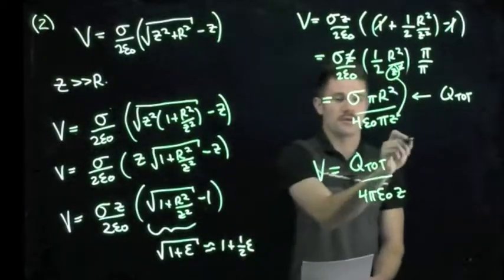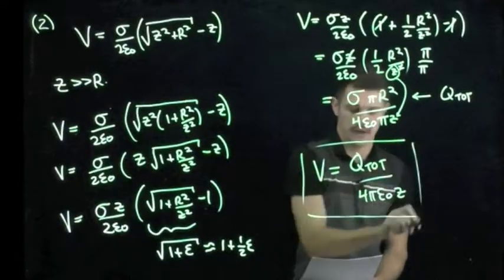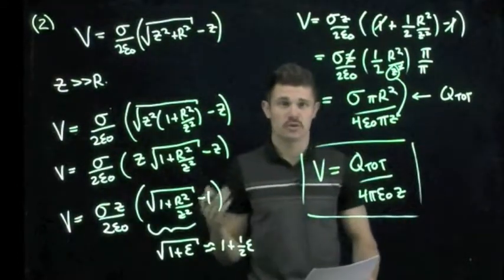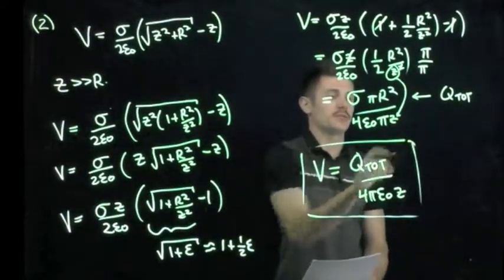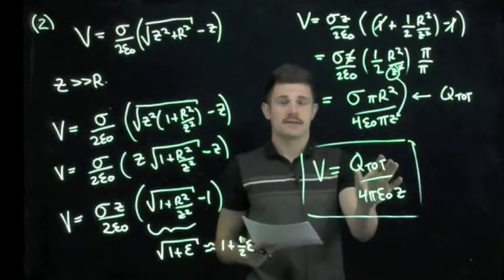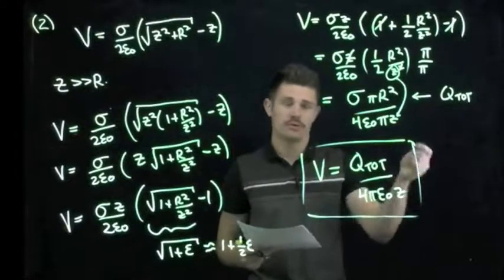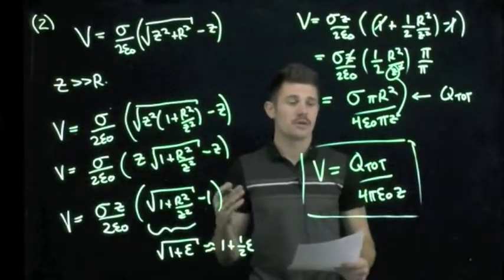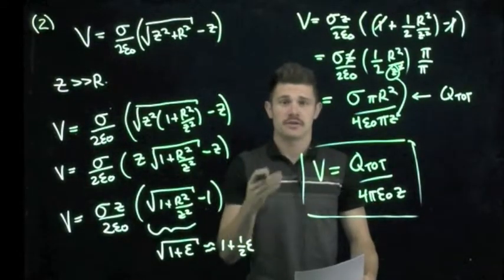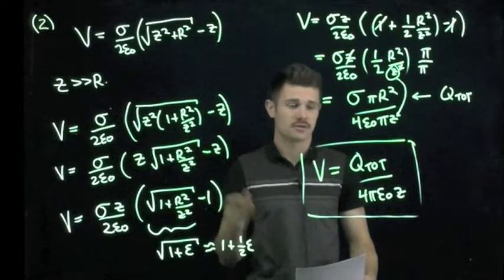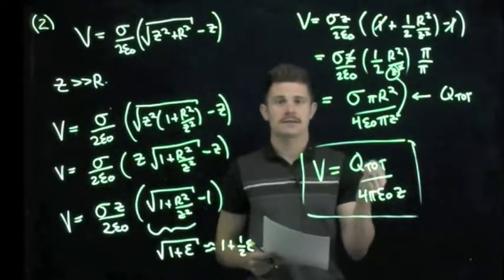So this is our potential that we find where z is much greater than r. And what's interesting about this is that it looks exactly the same as the potential of a single point charge at the origin when you're really far away. So essentially what we have seen by looking at this charged disk from a very far distance away is that it looks and acts like a point charge.